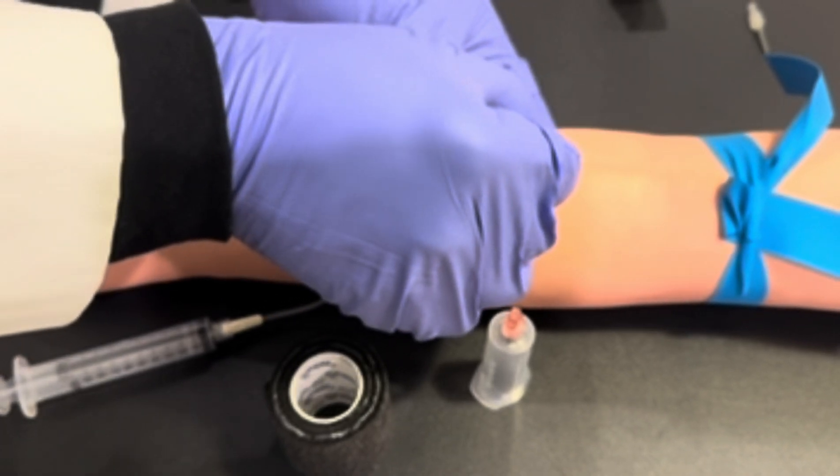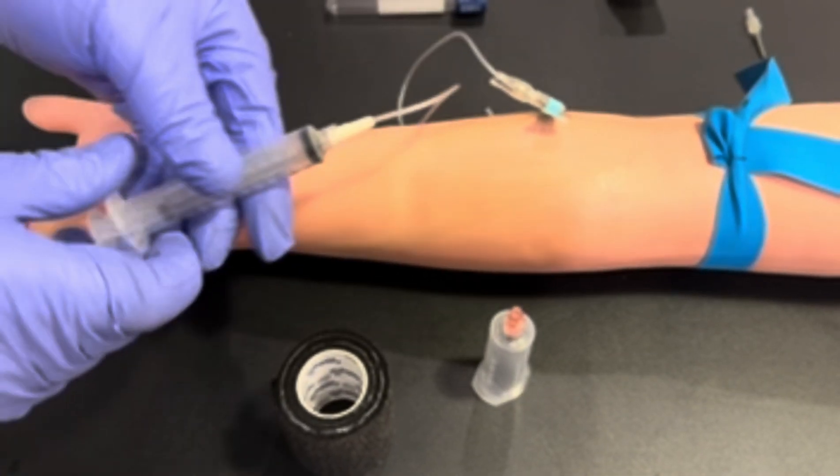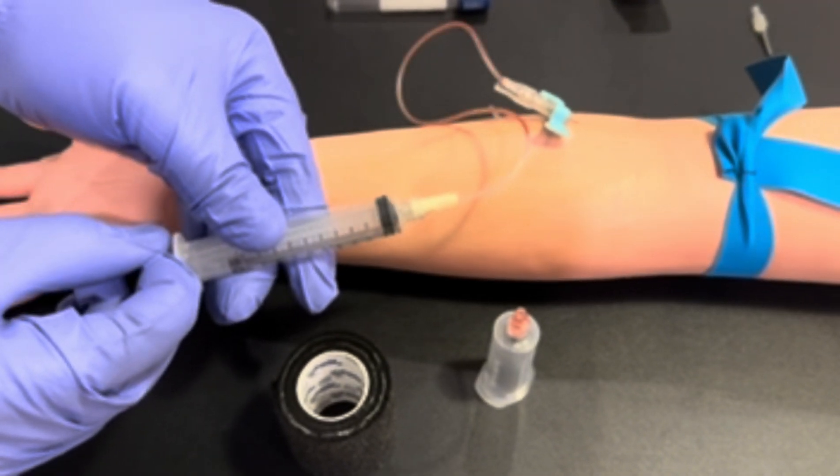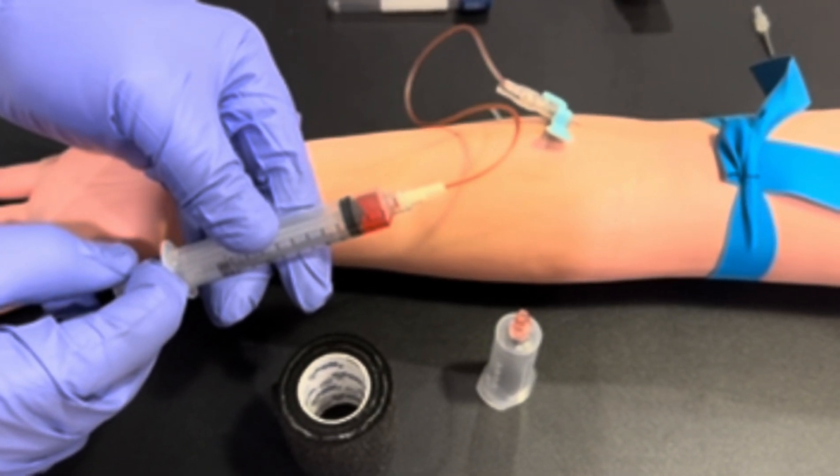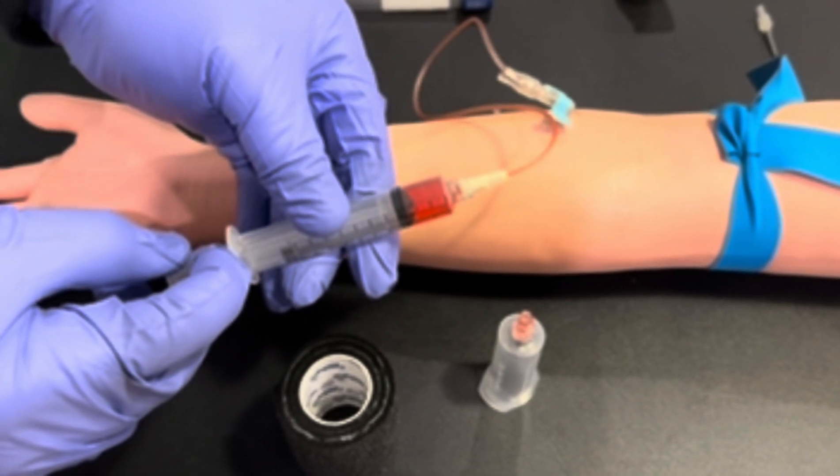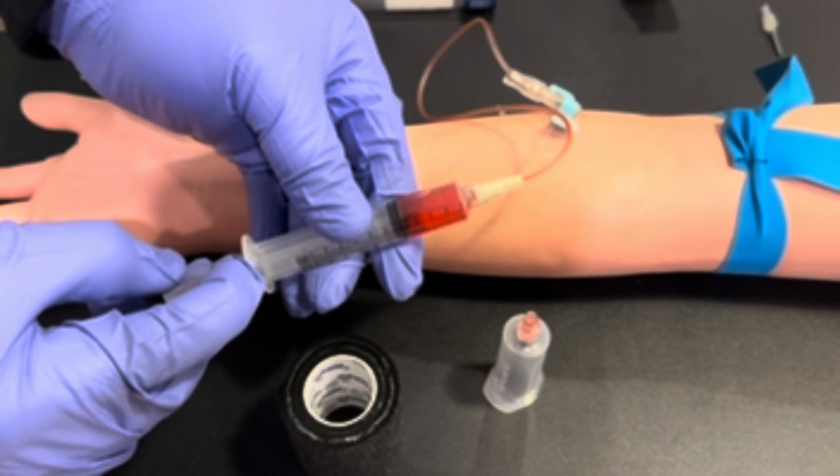Perform the venipuncture, inserting the needle at a 5 to 10 degree angle of insertion. Pull back on the plunger slowly, so that air does not collect in the syringe and you do not collapse the vein.